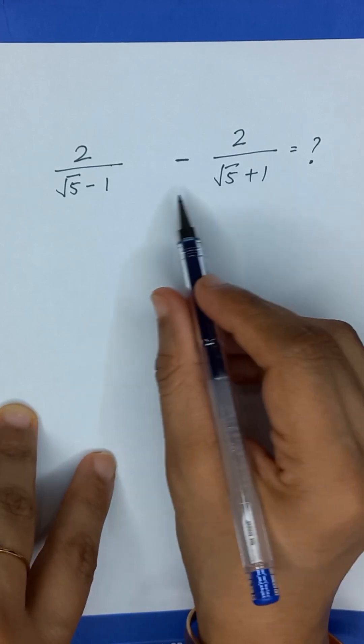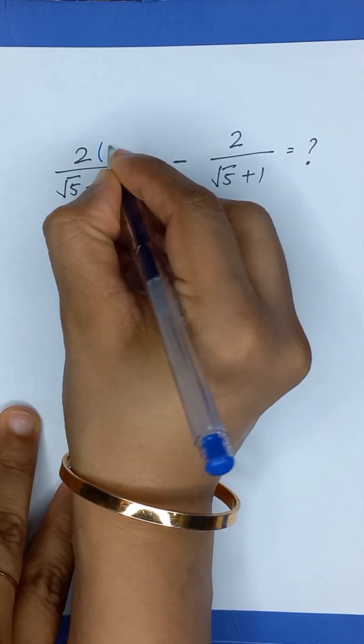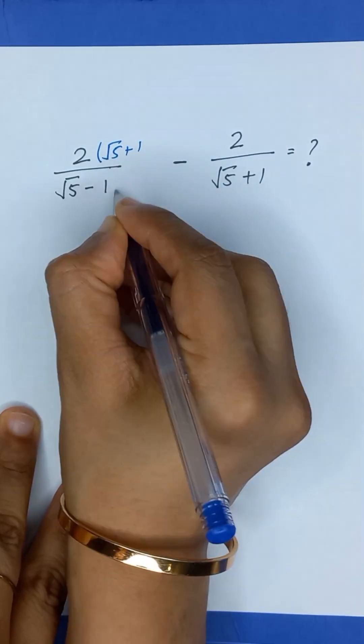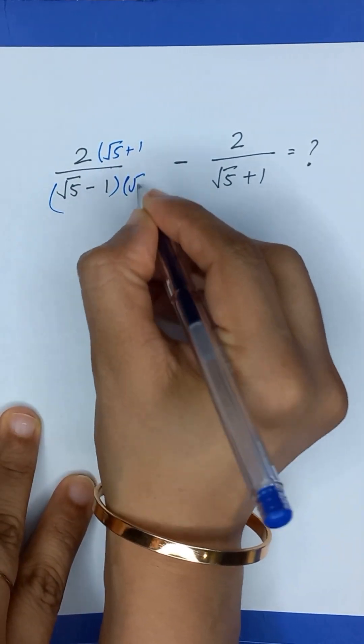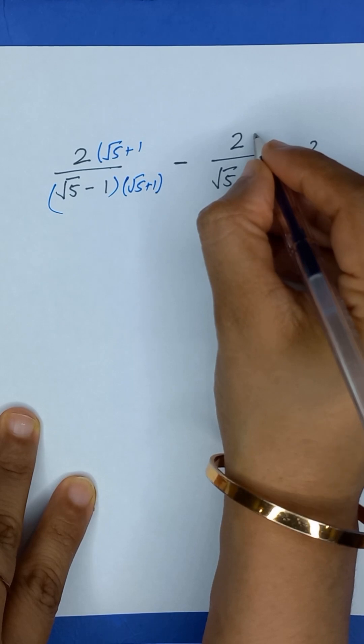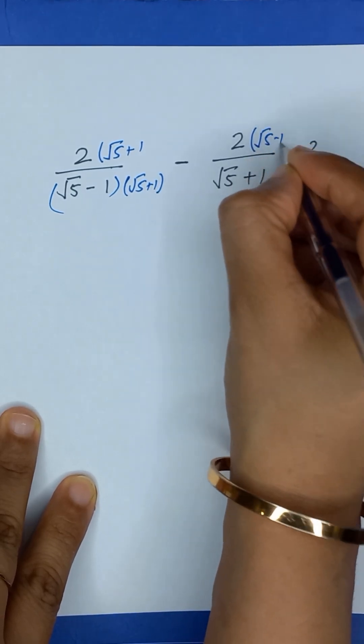So first of all, we will rationalize both terms by multiplying here square root of 5 plus 1 on this term, and here we will multiply square root of 5 minus 1.